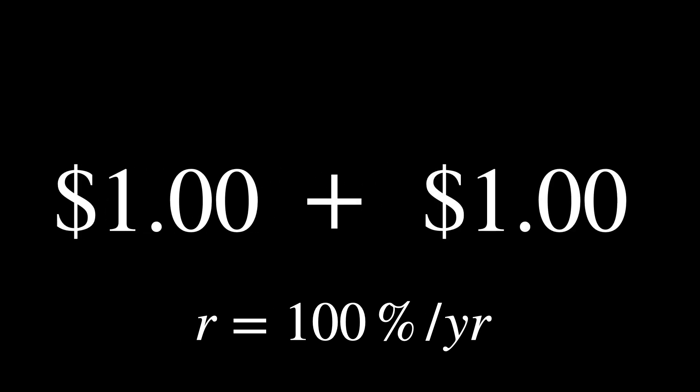What if you had $1 and a bank that paid you a generous 100% interest per year? After one year, you would have the original dollar plus $1 of interest, giving you $2, doubling your money.